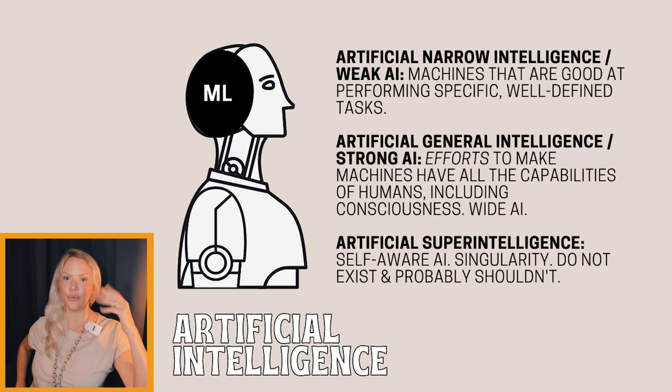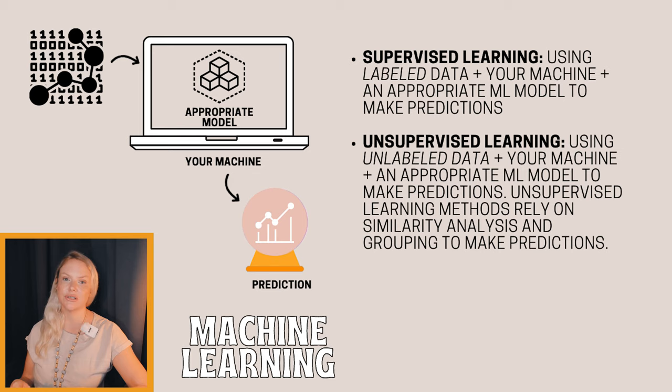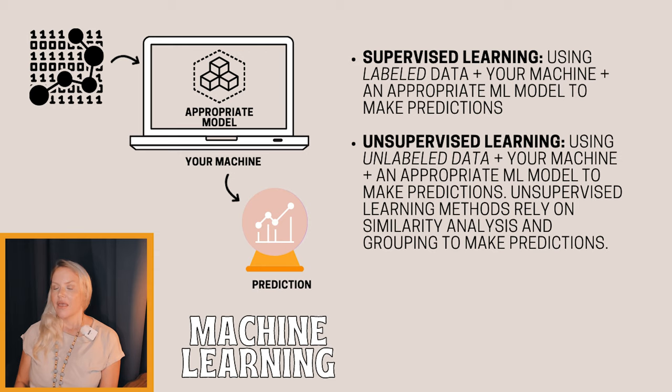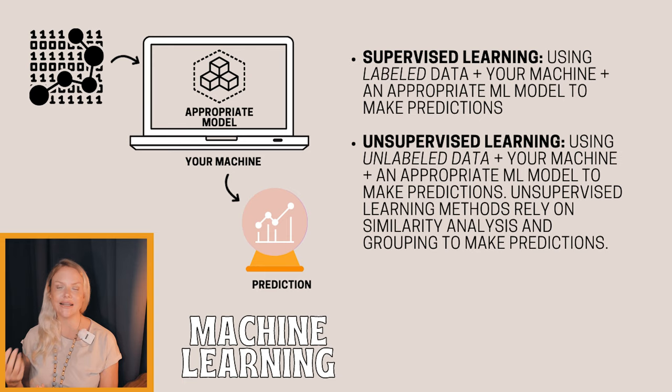Machine learning encompasses the statistical tools and methods required to generate predictions from data — not simple correlation, but more sophisticated predictions based on deep statistics and mathematics. There are four main types of machine learning models. The first is supervised learning, where you make predictions based on labeled data. The second is unsupervised learning, where you use machine learning methods to make predictions from unlabeled data, generally relying on grouping or similarity analysis.